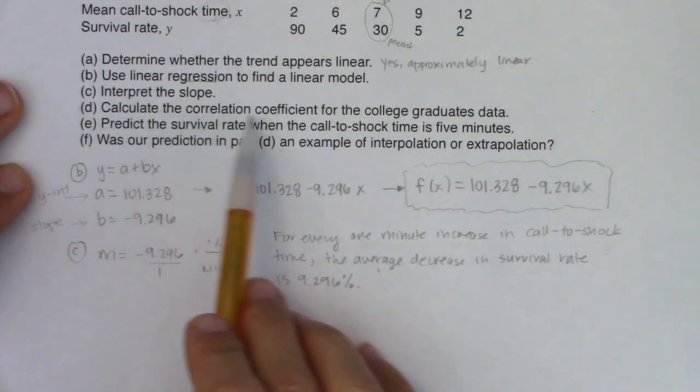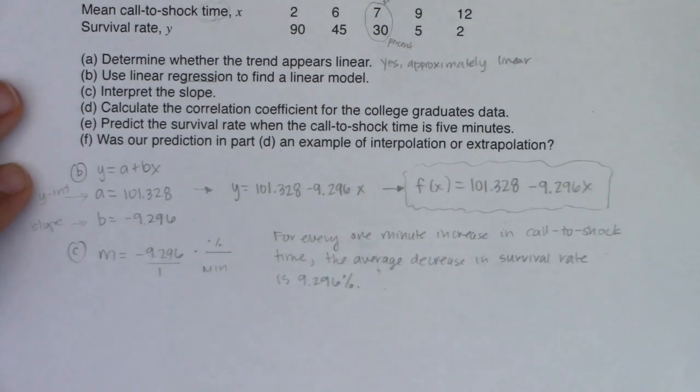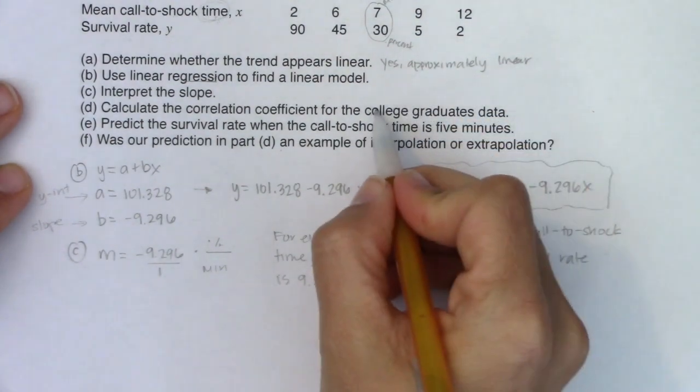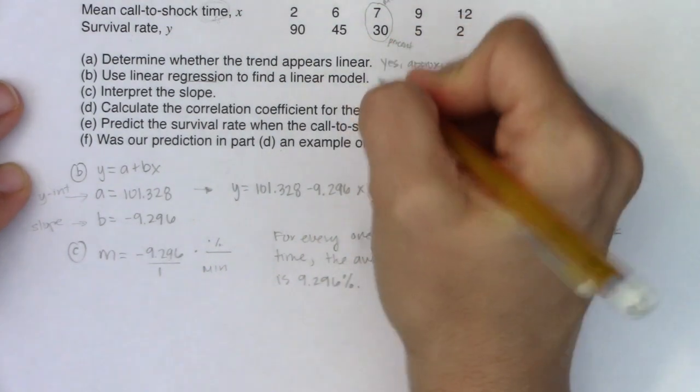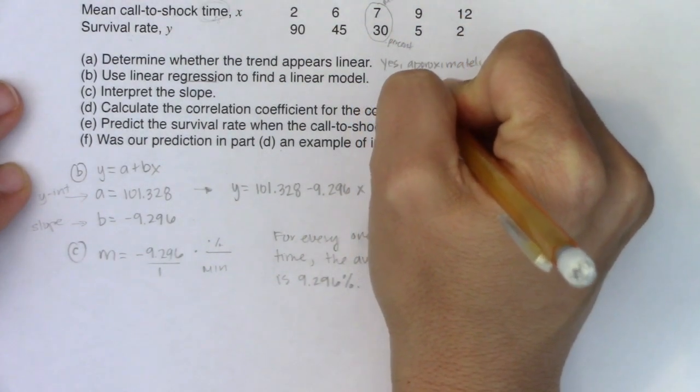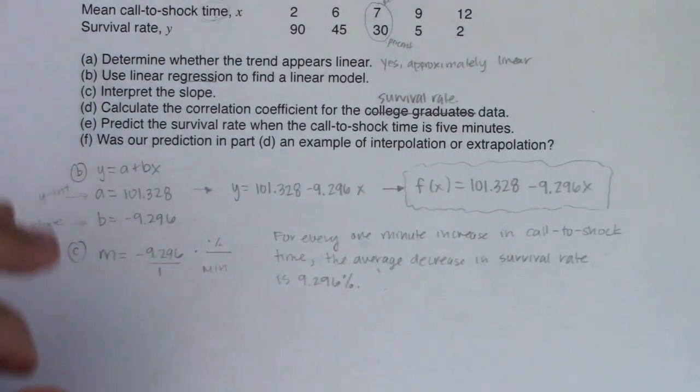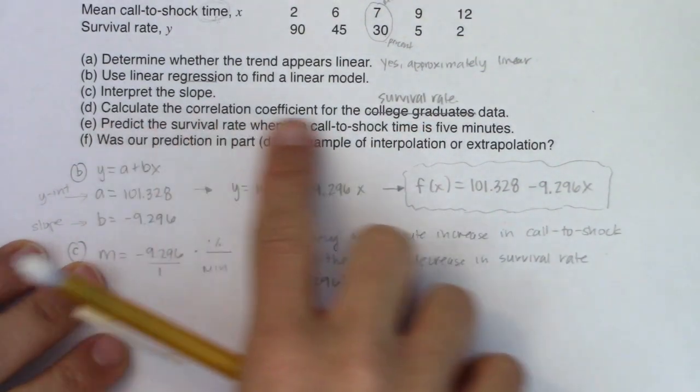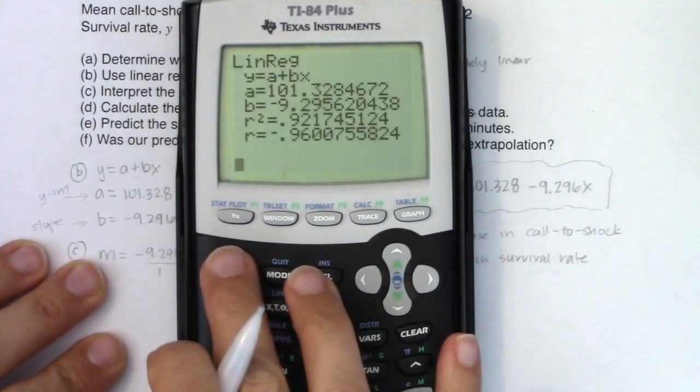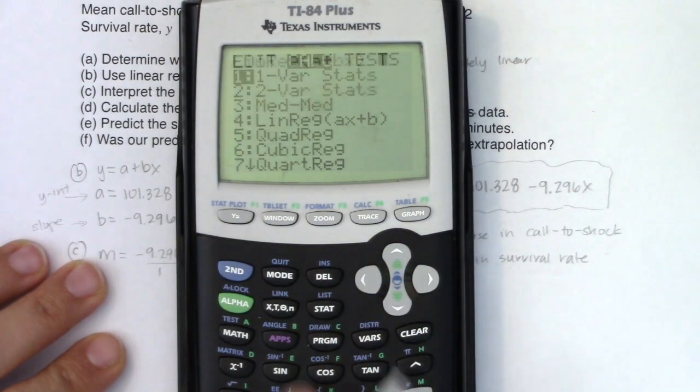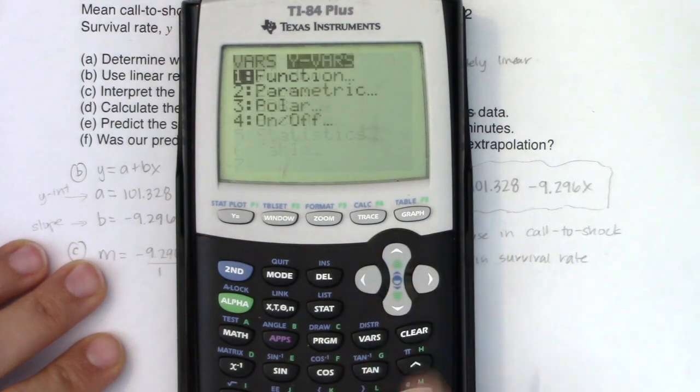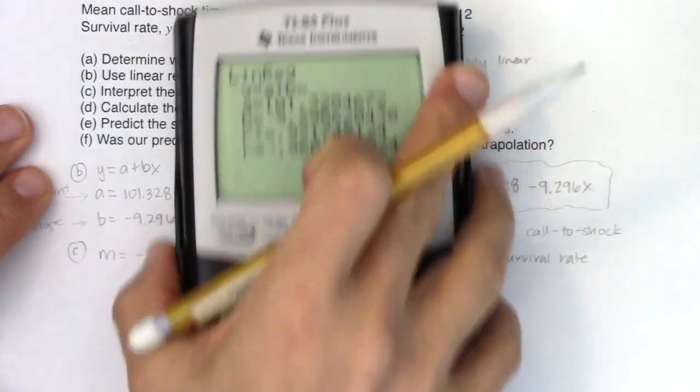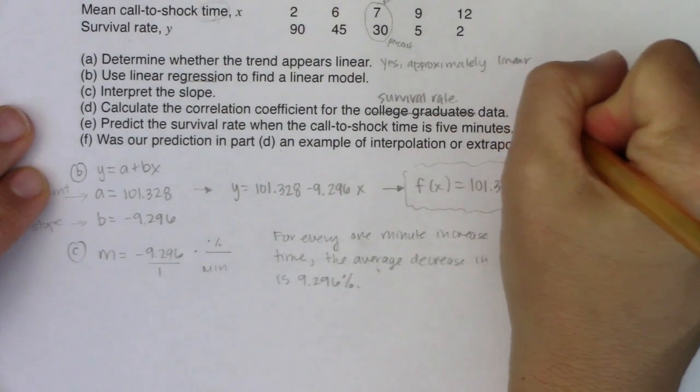So then part D we have calculate the correlation coefficient for the college graduates data. Well, that's fun. So this should definitely not say for the college graduates data, this should say for the survival rate data. So we're going to pretend I don't have a typo. I will fix that on your paper. So if I want to calculate the correlation coefficient, I have it here. It's still stat calc eight L one L two Y one. So it's the same command that gets you your linear model and your R. So in this case, our R is negative 0.96.